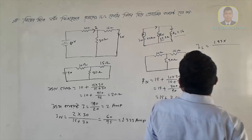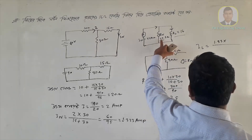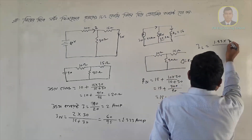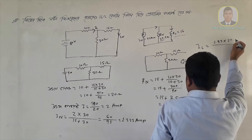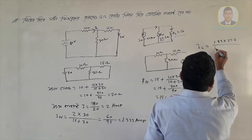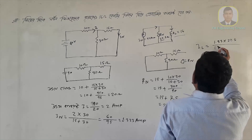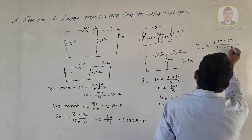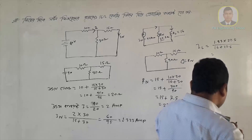If you have an answer, you will give us a question. This is 22.5. The answer is 16 plus 22.5.